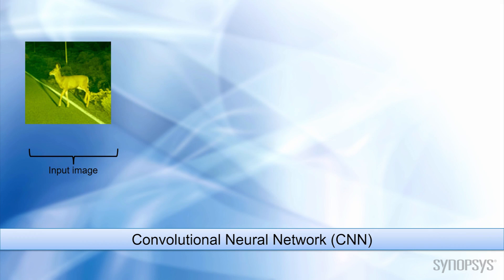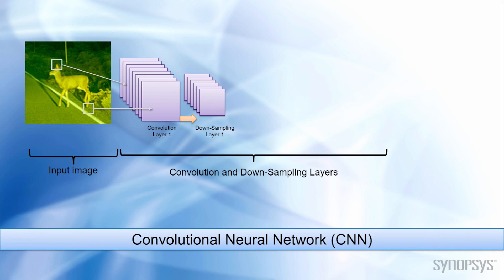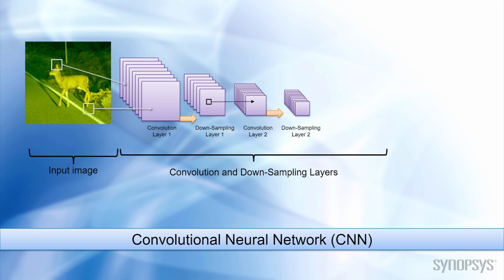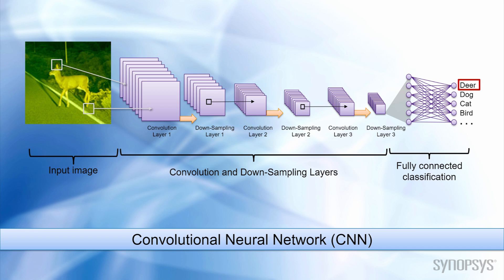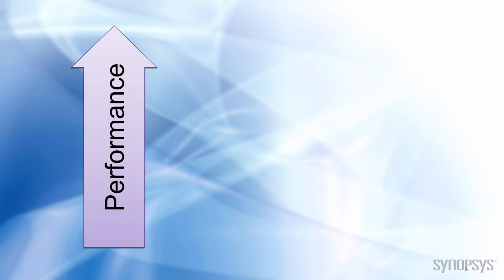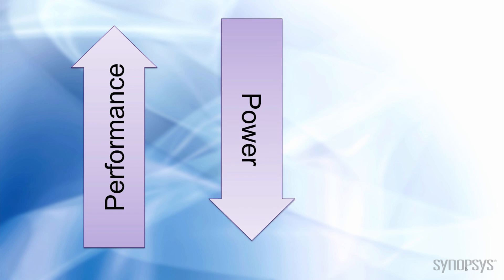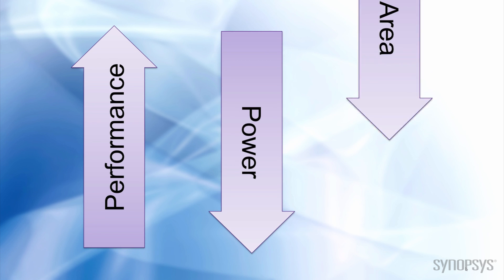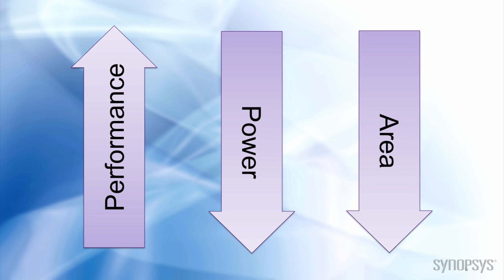And some vision algorithms, like Deep Learning Convolutional Neural Networks, or CNNs, require fast, massive calculations on each image. The main design challenge of Embedded Vision Processing is the need to balance a processor's performance with power, cost, and size considerations.